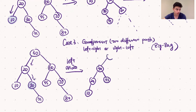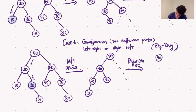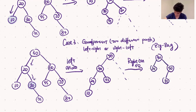Next, we right rotate 50. Right rotating 50 brings 30 to the root, 50 as its right child, 35 as 50's left child, 50's right subtree the same as before, and 30's left child being the subtree rooted at 20.